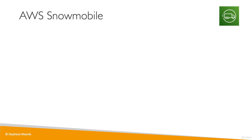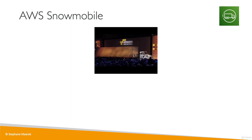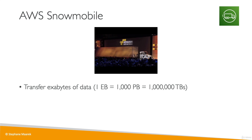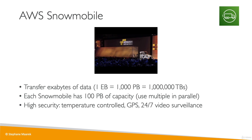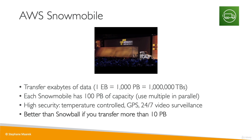Snowmobile is an actual truck. When AWS announced it, they actually brought a truck on stage to demonstrate. With the Snowmobile, you can transfer exabytes of data — one exabyte is 1,000 petabytes, or 1 million terabytes. Each Snowmobile has 100 petabytes of capacity, so to reach one exabyte you need 10 Snowmobiles. It features high security, temperature control, GPS, and 24/7 video surveillance. It's a better option than Snowball when you need to transfer more than 10 petabytes of data.